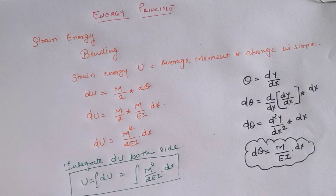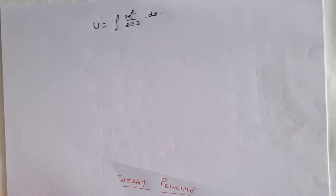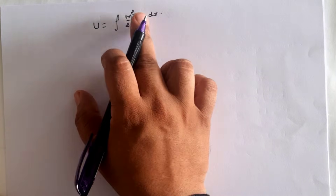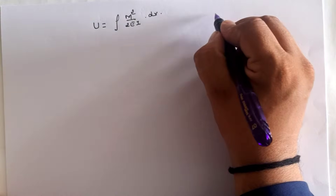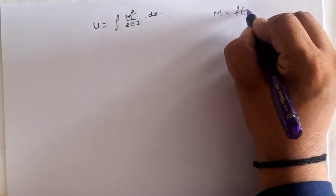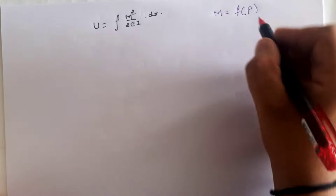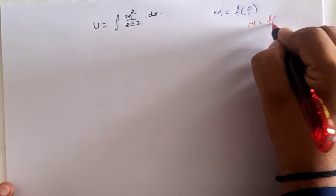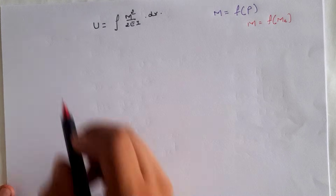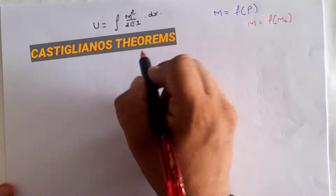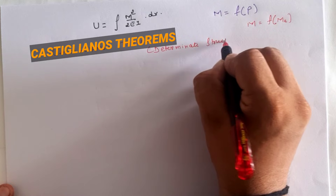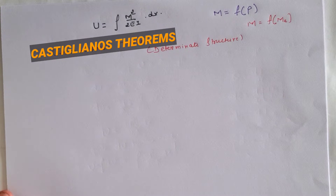For Castigliano's first theorem, the strain energy in the material equals ∫M²/(2EI)·dx. We know that moment is force multiplied by perpendicular distance, and moment can be written as a function of load, or we can say the moment is a function of external moment.